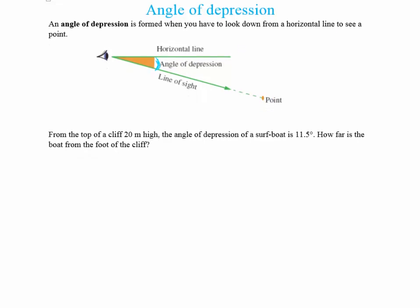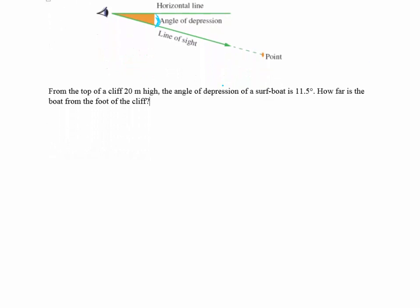So let's see how this works into a question. From the top of a cliff, 22 metres high, the angle of depression of a surf boat is 11.5 degrees. How far is the boat from the foot of the cliff?